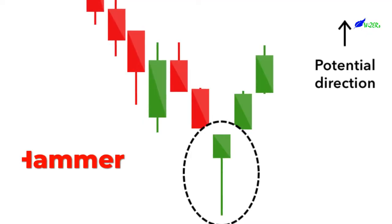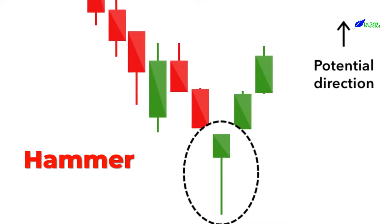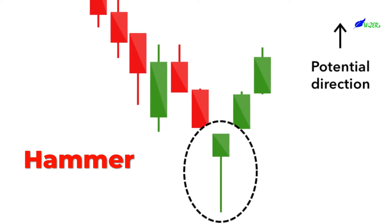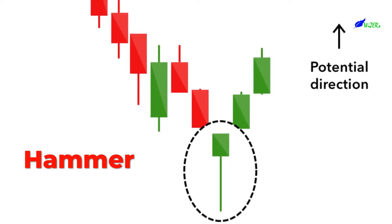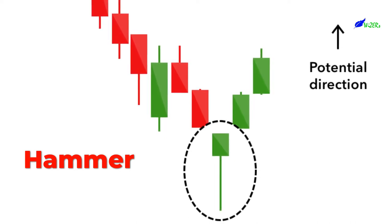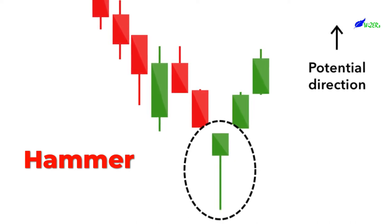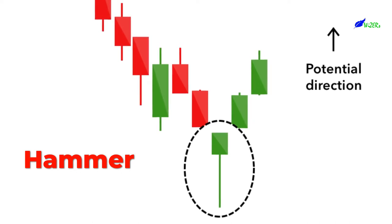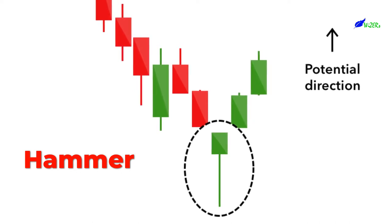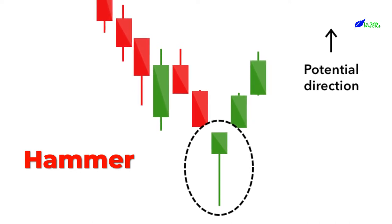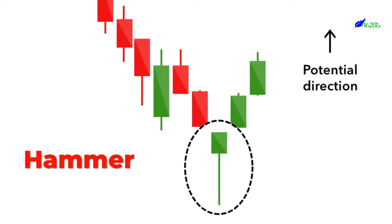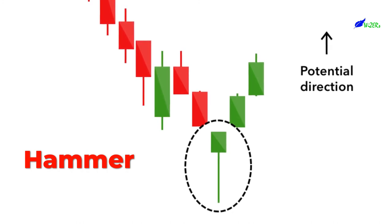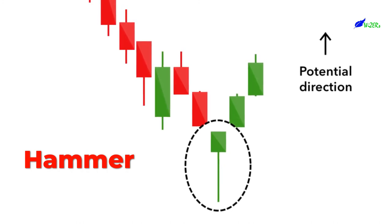The hammer candlestick pattern is formed of a short body with a long lower wick and is found at the bottom of a downward trend. A hammer shows that although there were selling pressures during the day, ultimately a strong buying pressure drove the price back up. The color of the body can vary, but green hammers indicate a stronger bull market than red hammers.